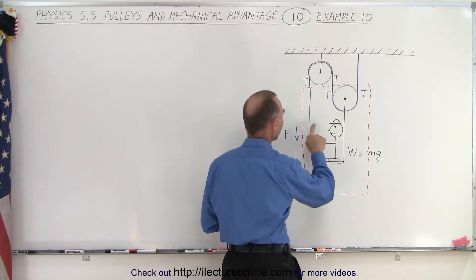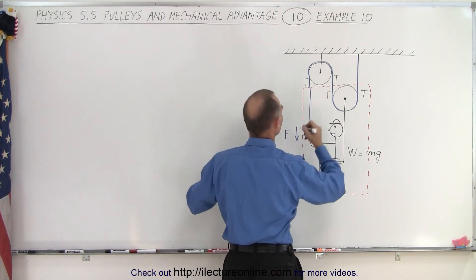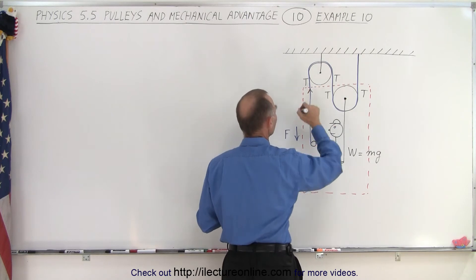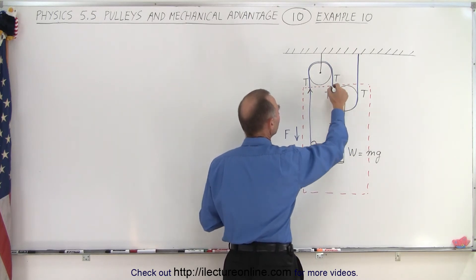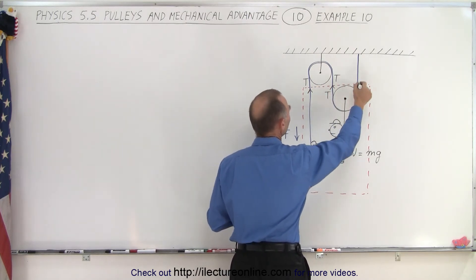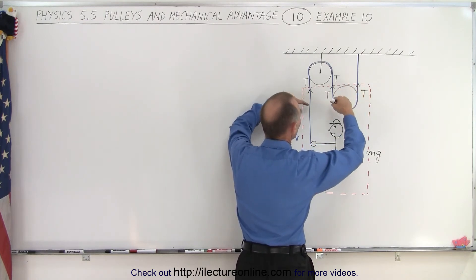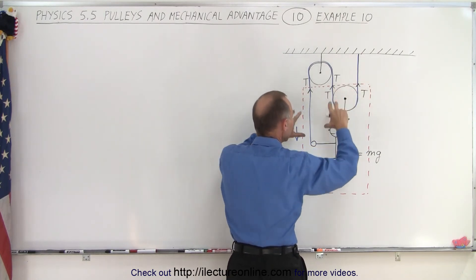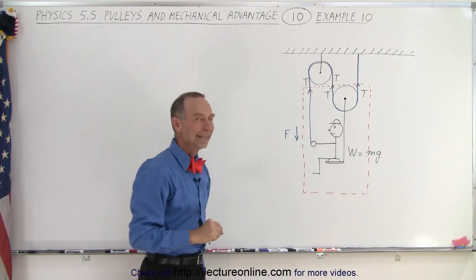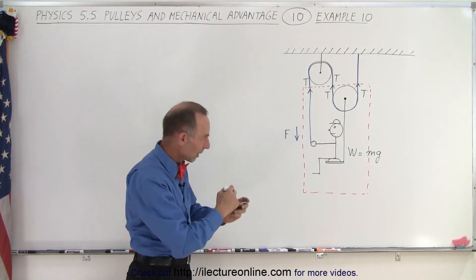Well, notice relative to the hand, this string is pulling up. So we have a tension going in this direction. Relative to this pulley, this is pulling up, and relative to this pulley, this is pulling up. So these are the forces pulling up on this pulley and the person in the diagram or in the free body diagram.